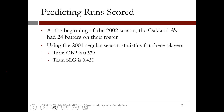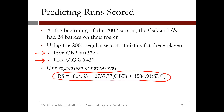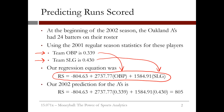Let's start by making a prediction for runs scored. At the beginning of the 2002 season, the Oakland A's had 24 batters on their roster. Using the 2001 regular season statistics for these players, we can estimate that team on-base percentage will be about .339 and team slugging percentage will be about .430. We built the following linear regression equation in R to predict runs scored. Plugging in .339 for on-base percentage and .430 for slugging percentage, we predict that the 2002 Oakland A's will score about 805 runs.